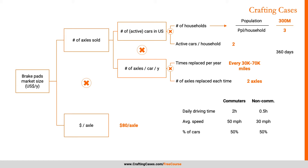Let's do some math. I'll start with the number of times replaced per year because this is the trickier math. I need to find how many miles for commuters and non-commuters. For commuters, they drive two hours a day at 50 miles per hour — that's 100 miles per day. Non-commuters drive half an hour at 30 miles per hour — that's 15 miles per day. So on average, because it's 50-50, that's 115 divided by two. Can I do 120 divided by two to get 60 miles on average? Sure.